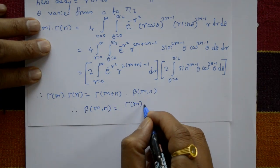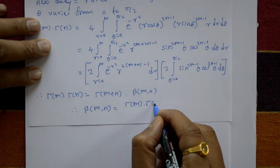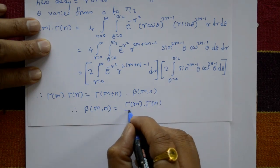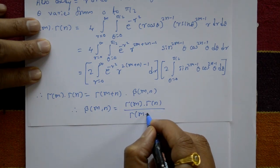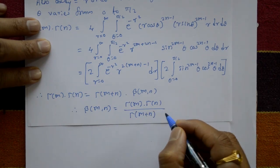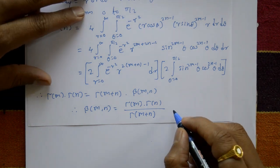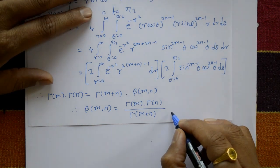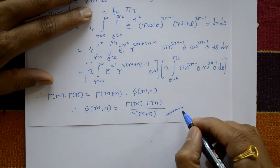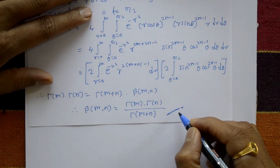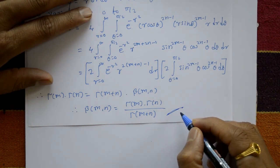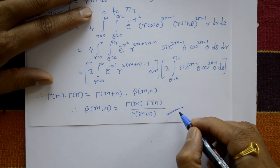Cross-multiplying, we get Beta(m,n) equals Gamma(m) times Gamma(n) divided by Gamma(m+n). This is the very important relation between the Beta and Gamma functions.